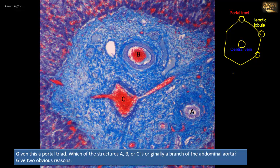The circular profile A is lined by simple cuboidal epithelium, so it is not a vessel but a bile duct. B and C are vascular profiles, since they are lined by endothelium, which is a simple squamous epithelium.